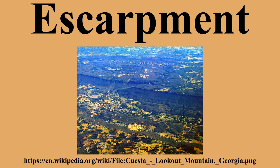An escarpment is a steep slope or cliff that forms as an effect of faulting or erosion and separates two relatively level areas of differing elevations. Usually, escarpment is used interchangeably with scarp, but some sources differentiate the two terms, where escarpment refers to the margin between two landforms, while scarp is synonymous with a cliff or steep slope. The surface of the steep slope is called a scarp face.